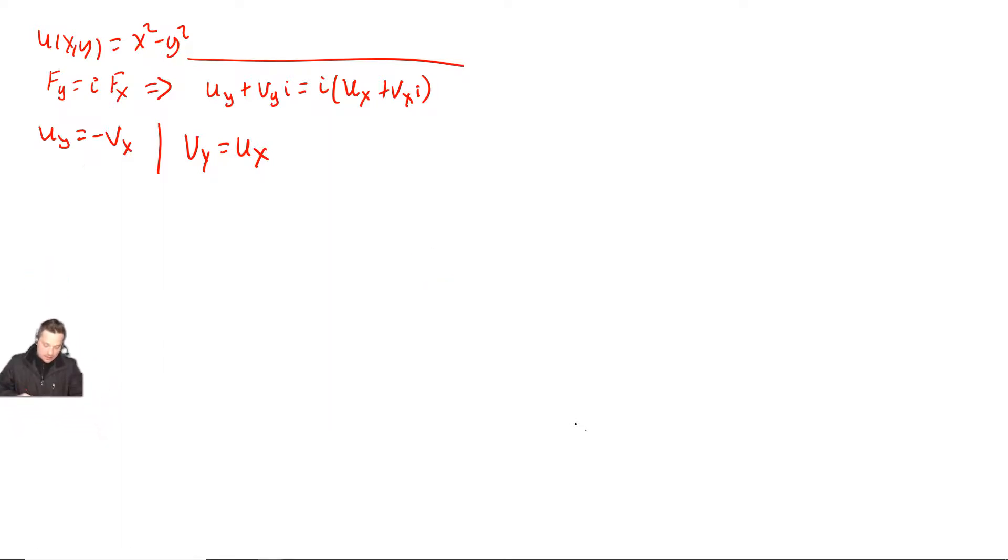So with that in place, let's proceed. I can find u sub y. That's pretty easy here. So when I differentiate x squared minus y squared with respect to y, that's going to give me negative 2y. But that negative 2y, according to this one right here, that's also negative v sub x. So what I can say is that negative v sub x is also equal to negative 2y.